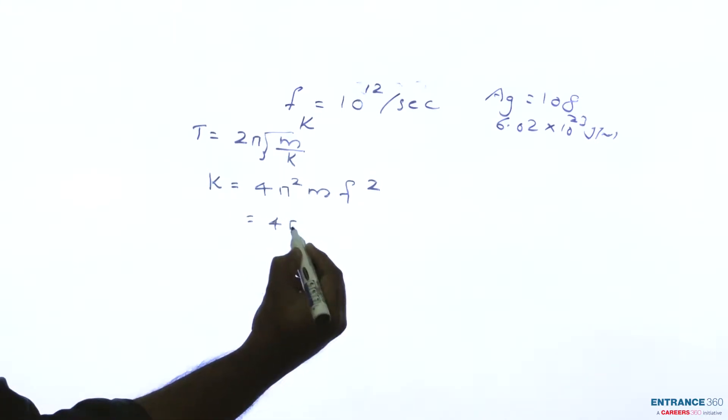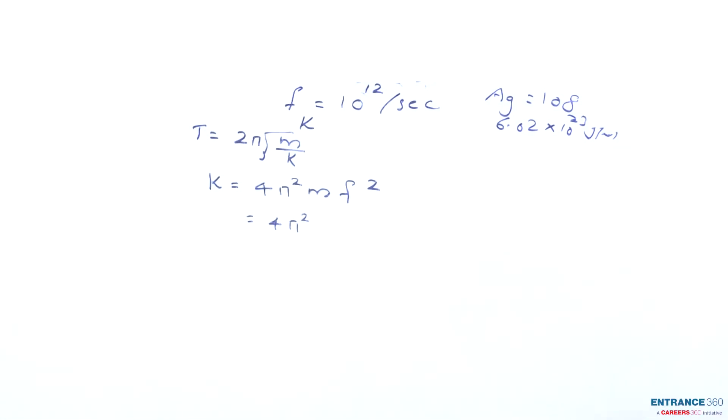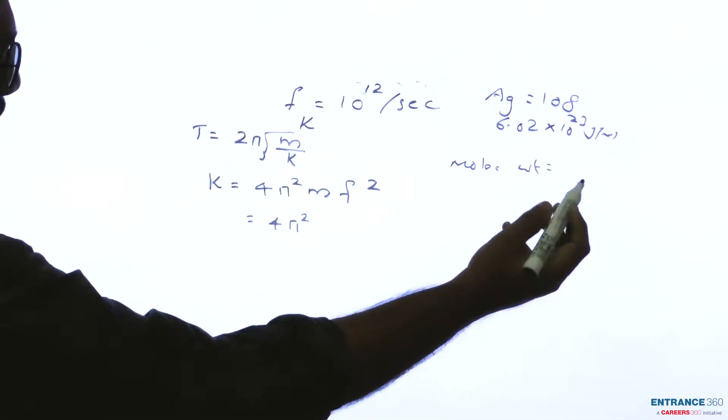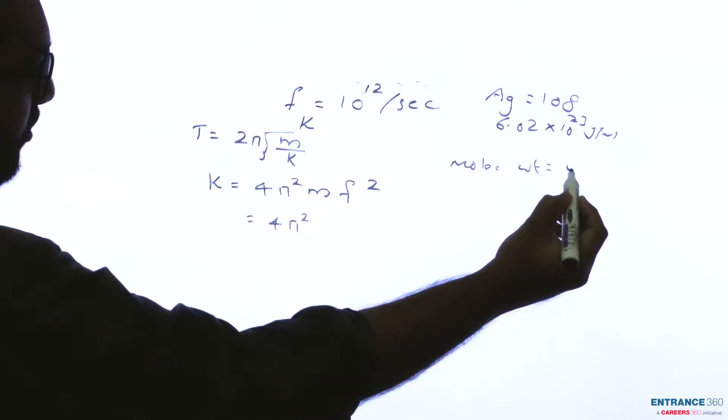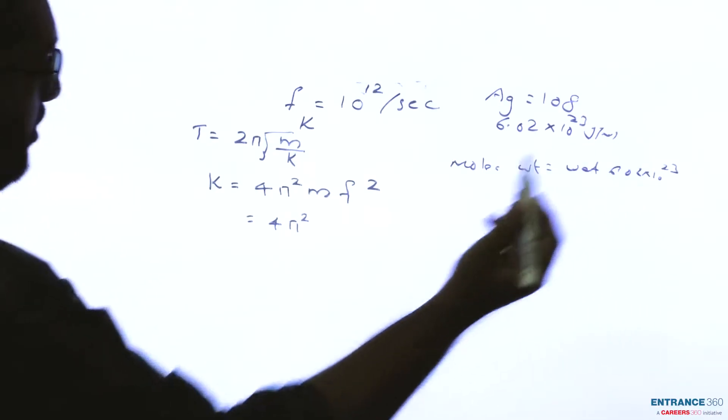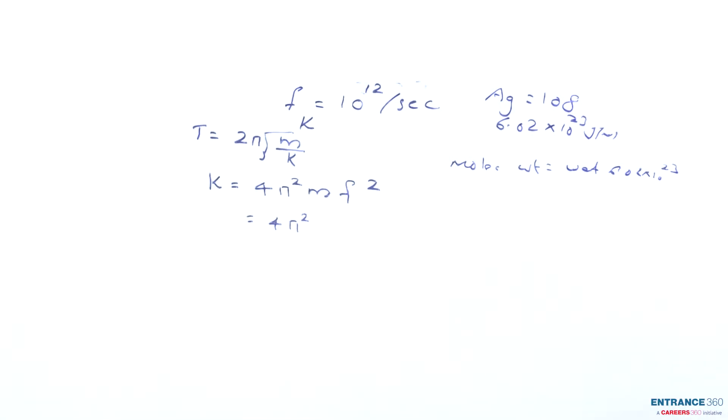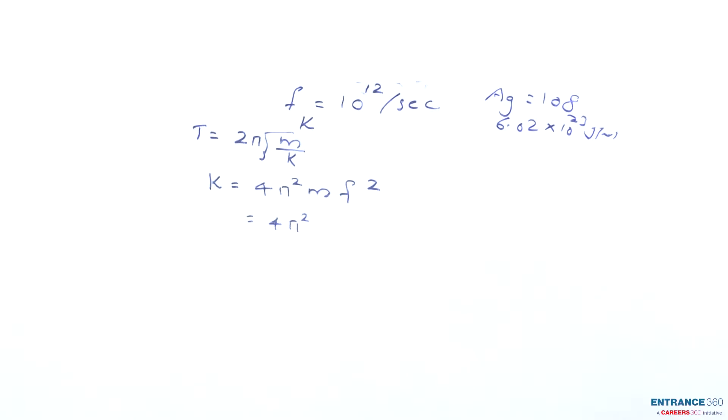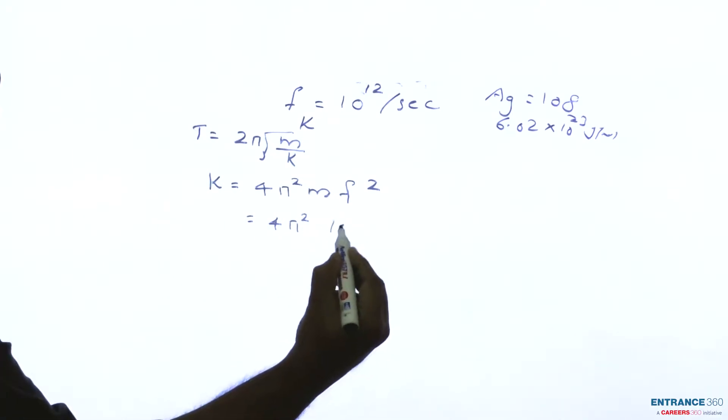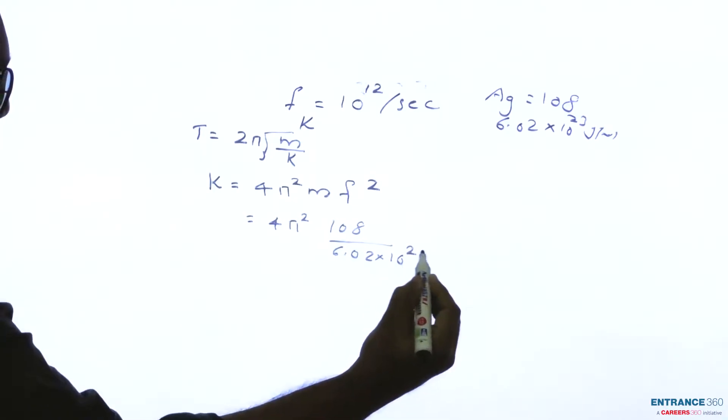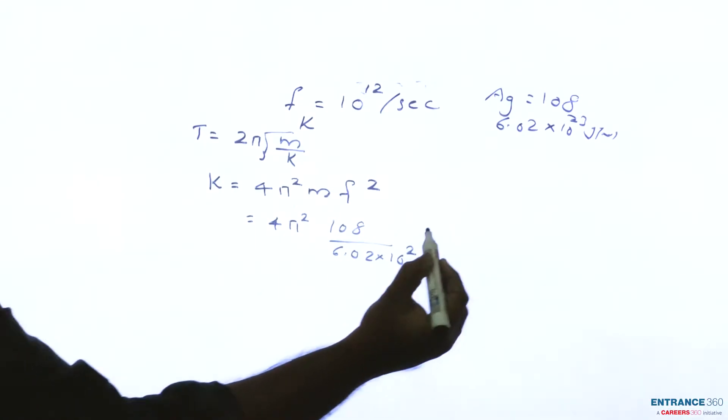Which is equal to 4π square. We have to calculate mass of one silver atom. Given molecular weight is the weight of 6.02 into 10 raise to 23 atoms, so weight of one atom will be 108 divided by Avogadro number. So we can write 108 divided by 6.02 into 10 raise to 23.